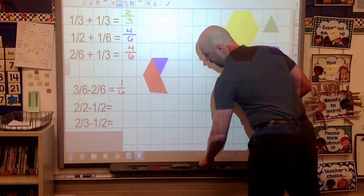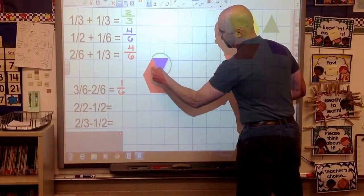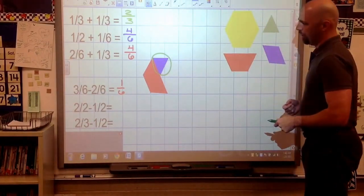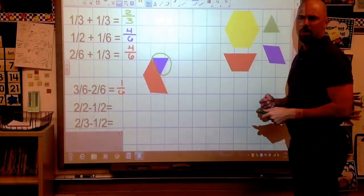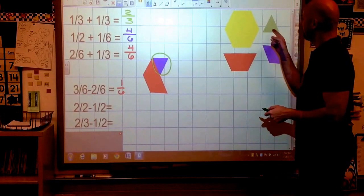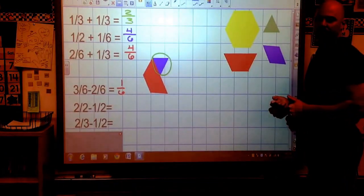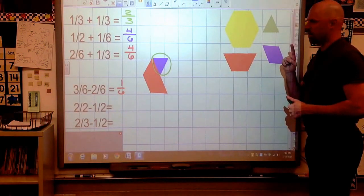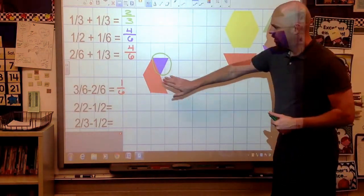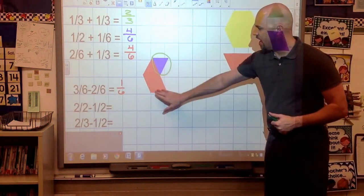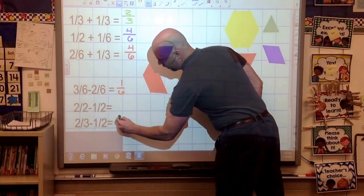And the only piece I have left here is that blue triangle. And then I'll ask the kids, what does the blue triangle look like? Well, it looks like the green triangle. Well, how much is our triangle worth then? It's worth 1/6. So 2/3, cover up and take away this 1/2, is actually worth 1/6.